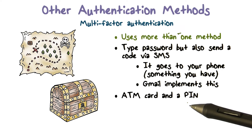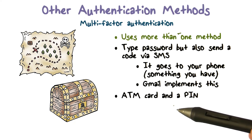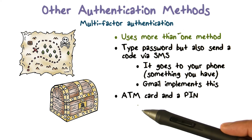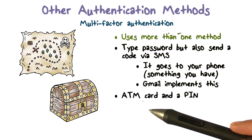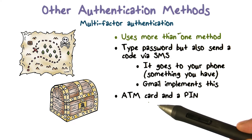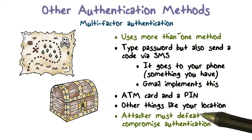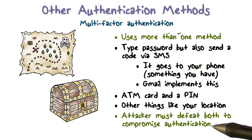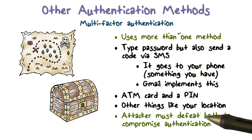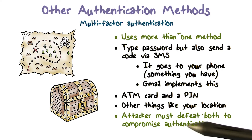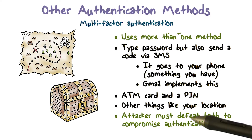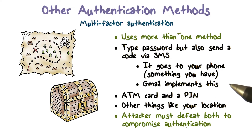Your ATM card and PIN that you use to get money out of an ATM machine is actually two-factor authentication. The PIN is something you know; the card itself is something you have. Other methods that use things like where you are, your location, the IP address of your machine, or OS fingerprint add a little more to the authentication process. With multi-factor authentication, a hacker must defeat both factors to successfully compromise the authentication.